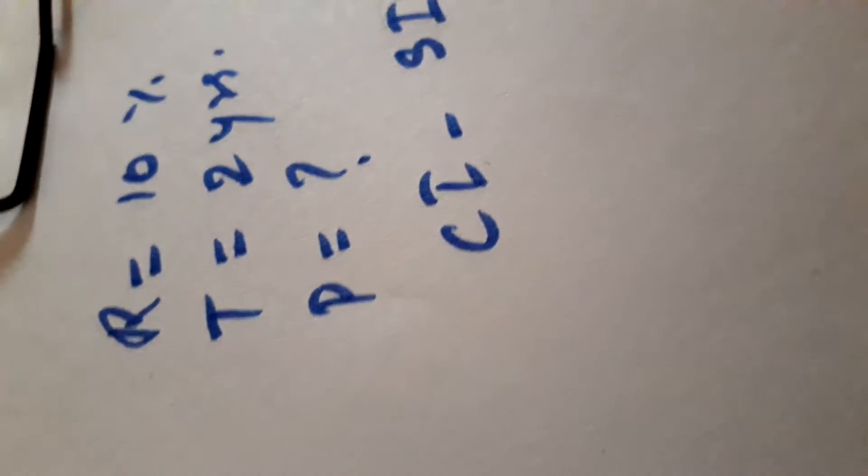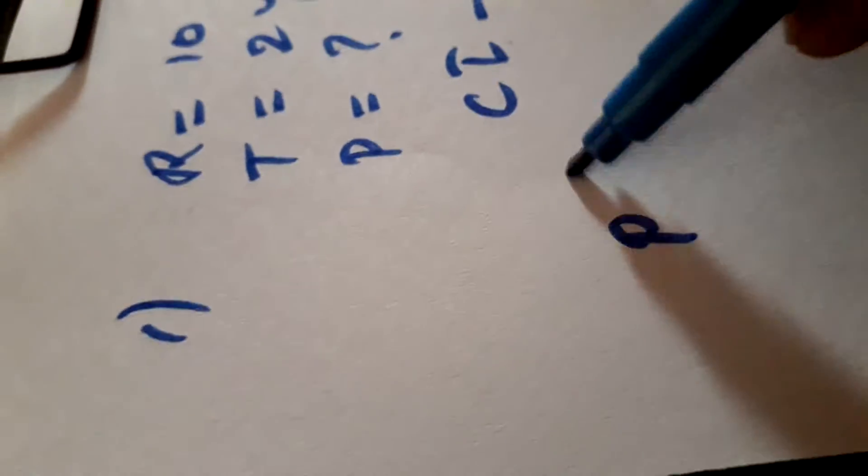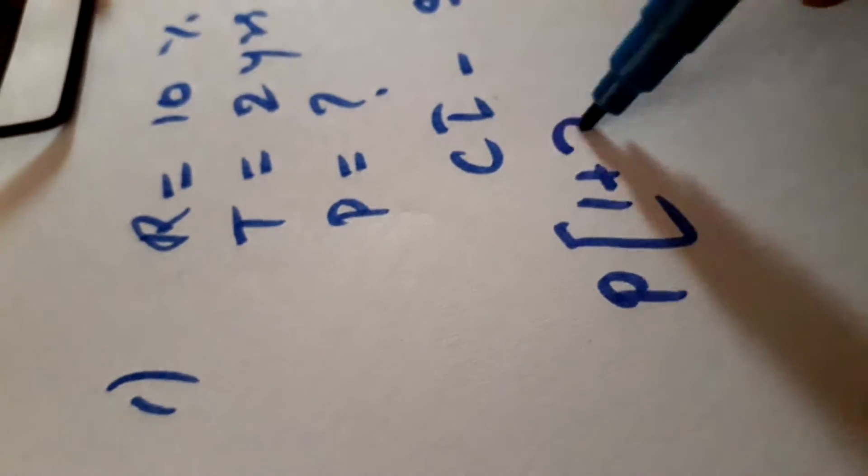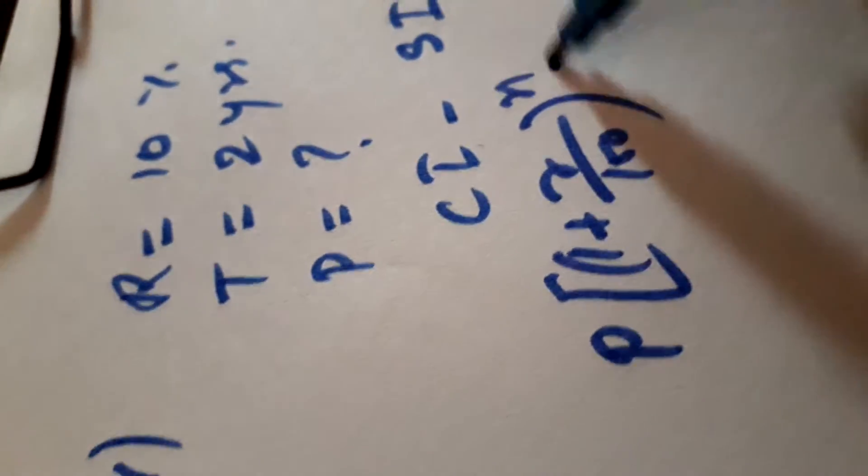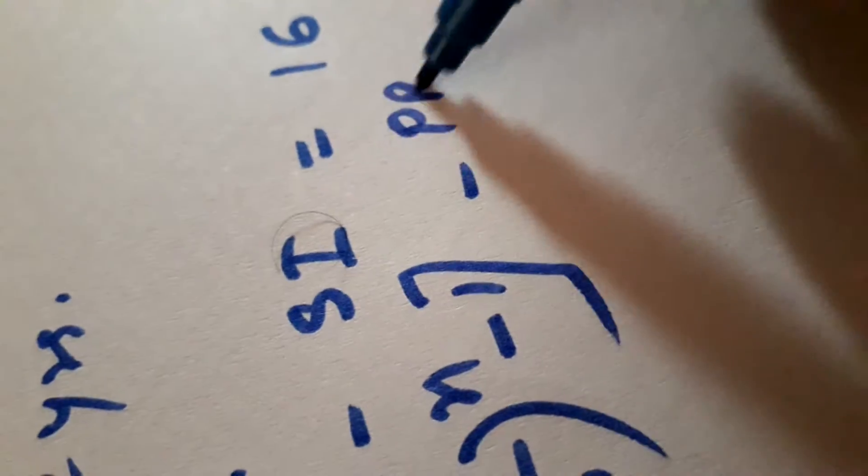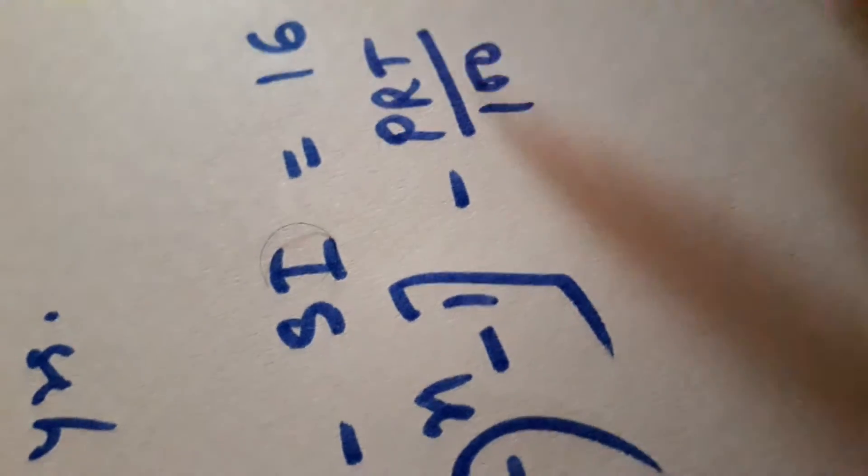We will write the formula of CI that is compound interest P(1 plus R upon 100) power n minus 1. And formula of simple interest is PRT upon 100 is equal to 16. It is given.